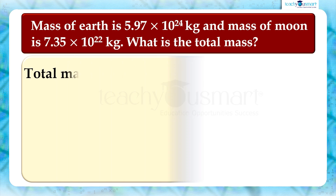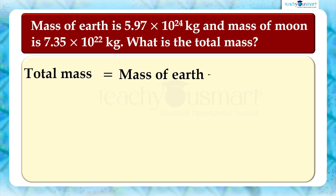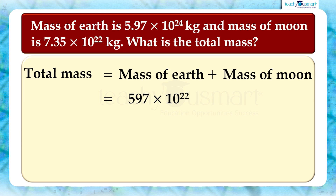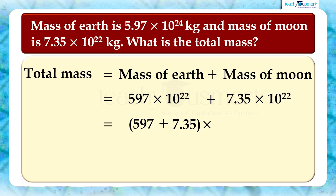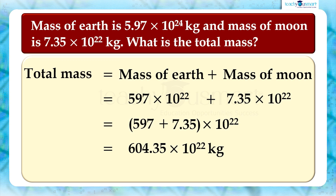Now we can find the total mass. Total mass equals mass of the Earth plus mass of the Moon, which equals 597 multiplied by 10 raised to 22 plus 7.35 multiplied by 10 raised to 22, which equals 597 plus 7.35 multiplied by 10 raised to 22 kilograms. This is the total mass of the Earth and Moon combined.